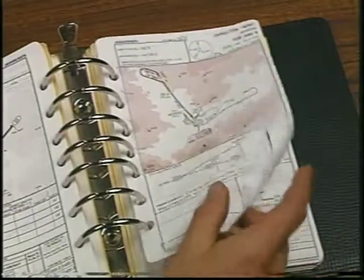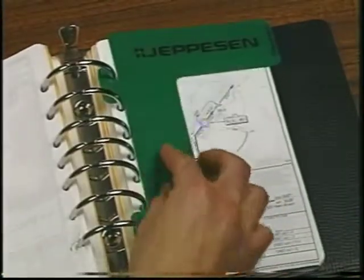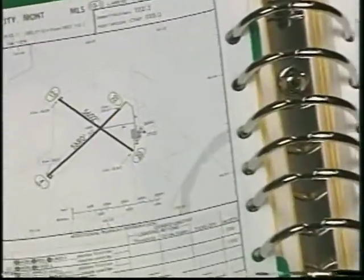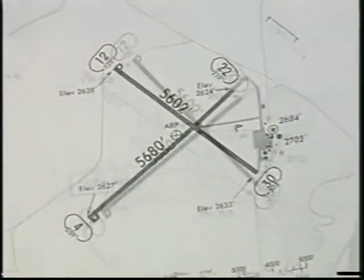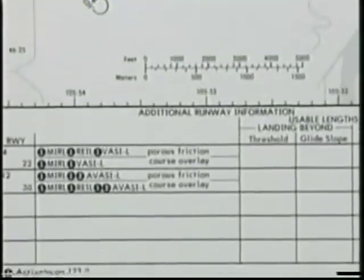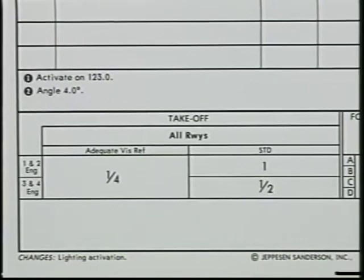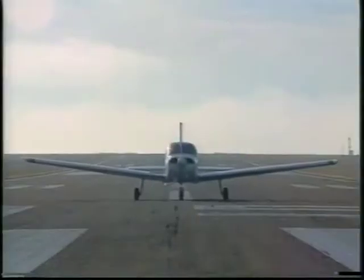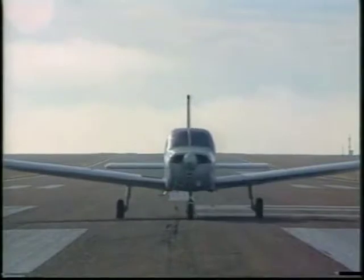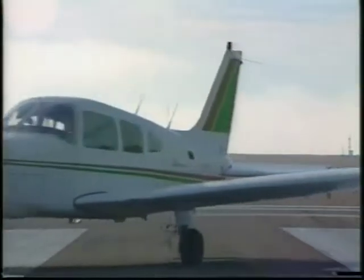Once the route is established, you need to check the approach charts for more specific information. First, you need to find out if there's an IFR departure procedure for your departure airport. Miles City doesn't have either one. It's also a good practice to study the approach charts at the departure airport in case you must make an unscheduled return after you take off.